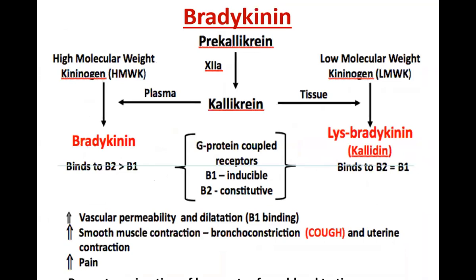Bradykinin is a vasodilator produced from high molecular weight kininogen. There is also lysyl bradykinin, produced from low molecular weight kininogen. If produced in the tissues it is called lysyl bradykinin; if produced in the plasma it is called bradykinin. The main roles are: it increases vascular permeability, causes vasodilation, plays an important role in inflammation, acts as a chemoattractant for leukocytes, but it causes bronchoconstriction and uterine contraction. Bradykinin is an important vasodilator and increases capillary permeability, playing an important role in inflammation.